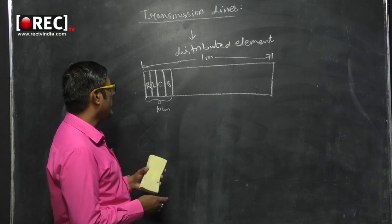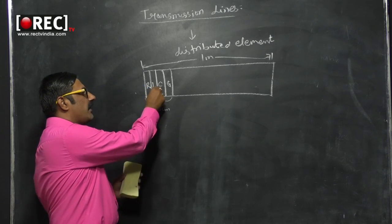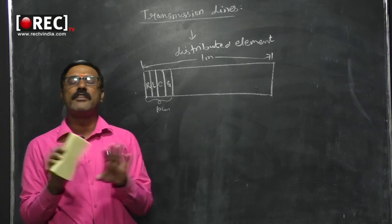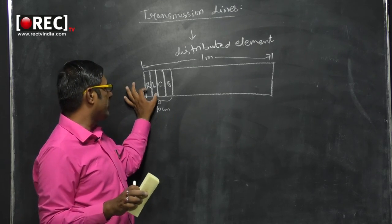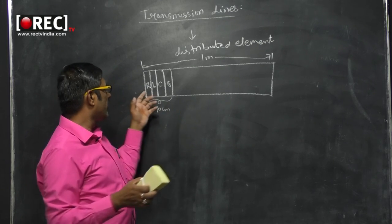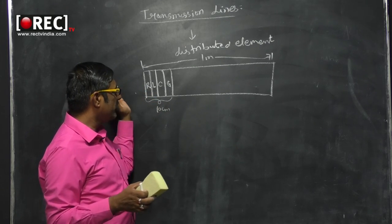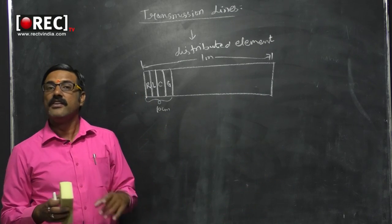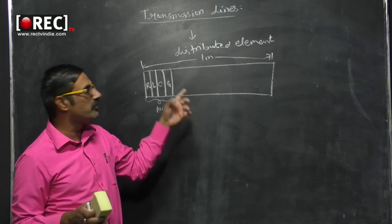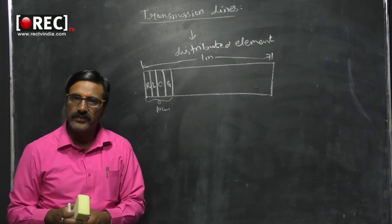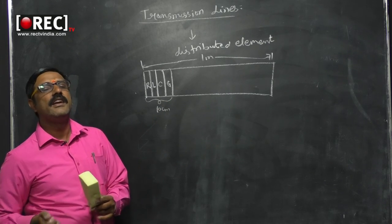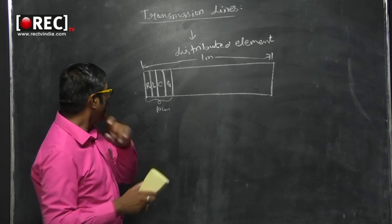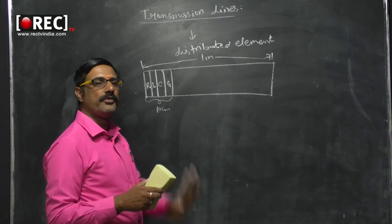The elements R, L, C, and G are not physically separated — they are put together and distributed over the length of the transmission line. Because R, L, C, G are distributed over the length, we say the transmission line is a distributed element. This is an important point to keep in mind.